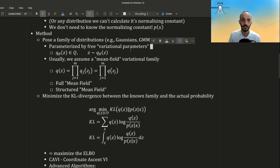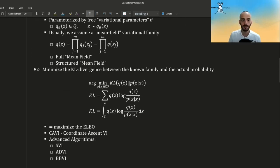How do we find the optimal theta? Well, we try to minimize the KL divergence between this variational distribution, which we can control, and the posterior, which we don't know completely, we only know up to a normalizing constant.